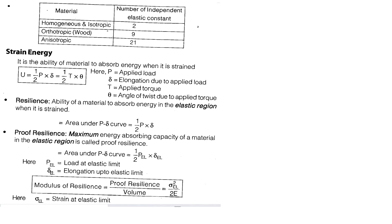For homogeneous isotropic material: 4 overall elastic constants, 2 independent (E and μ). Orthotropic: 12 overall, 9 independent. Anisotropic: infinity overall, 21 independent.